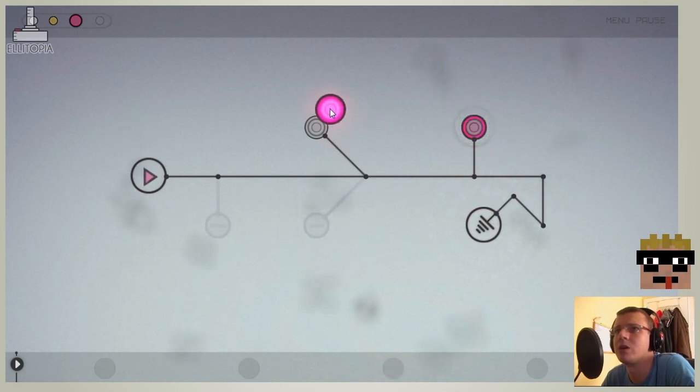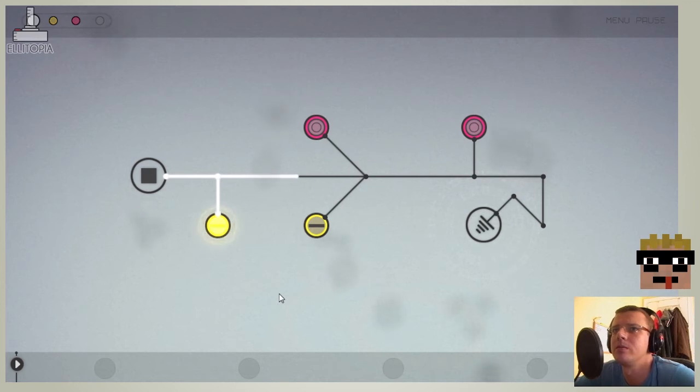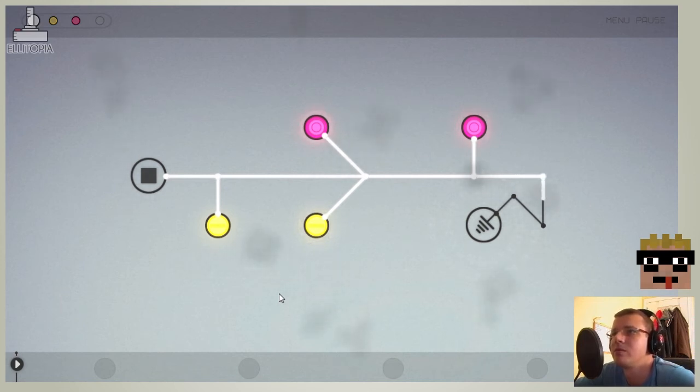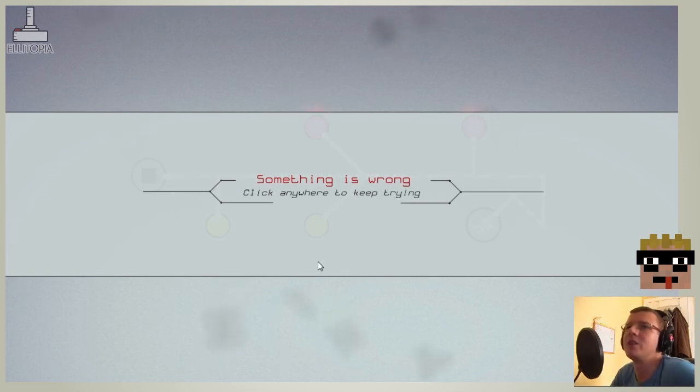Right, let's deliberately do it wrong and see what we get. Oh, hold on. Let's put them all on. There we go. So we've got the first ones right and we've deliberately got the second ones wrong. Let's find out what it does. Still sounds good. Doesn't end right though. Something is wrong. Okay. So click anywhere to keep trying.